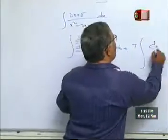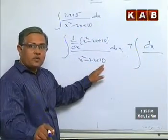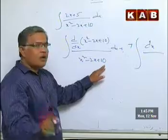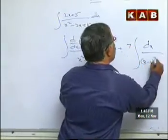So dx by x square minus 2x plus 10 should be adjusted as sum of the 2 squares or difference of 2 squares. So x minus 1 whole square.